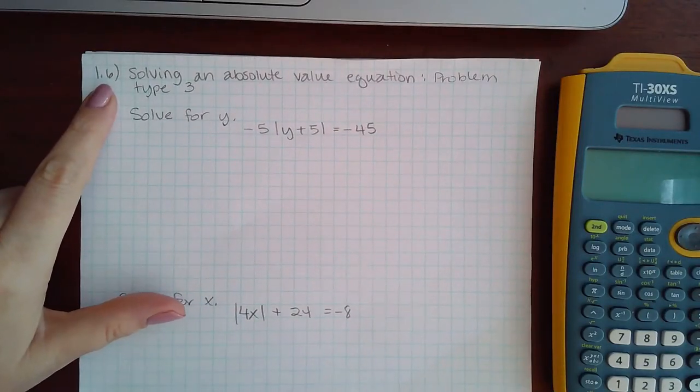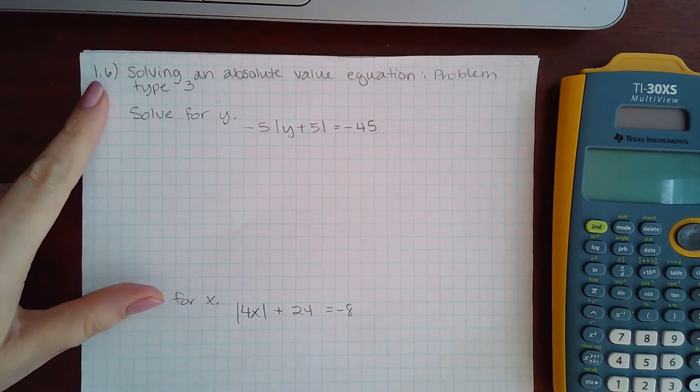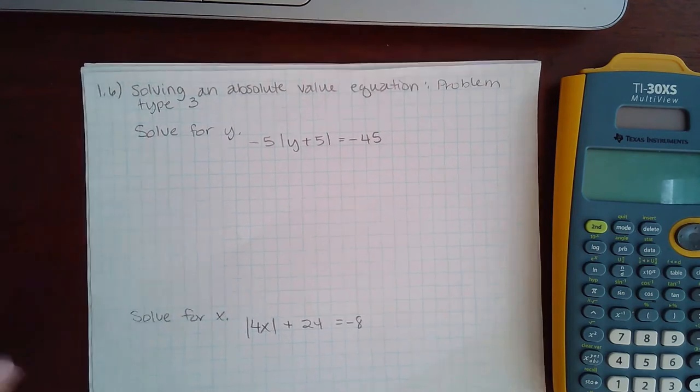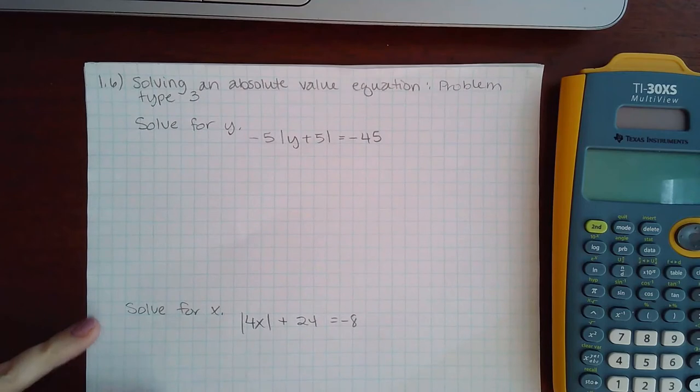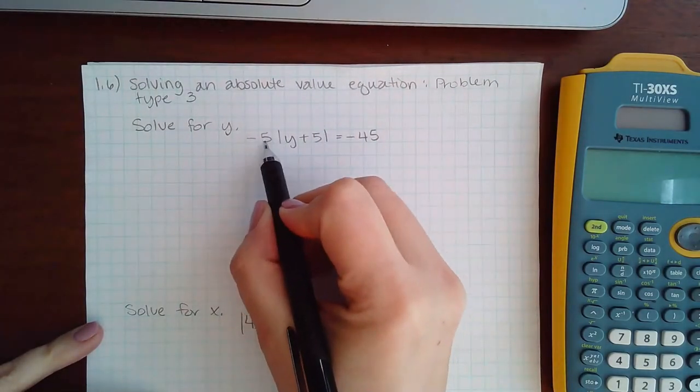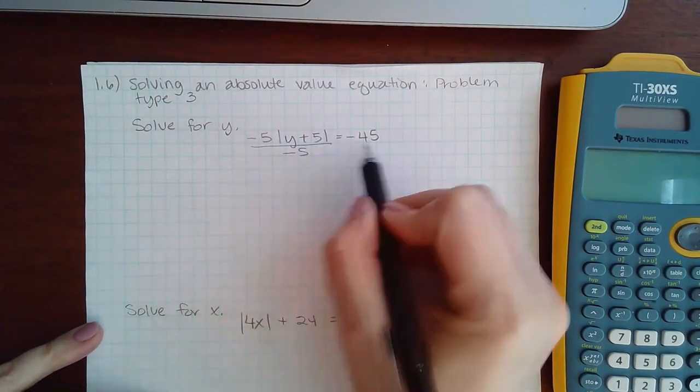This is 1.6, solving an absolute value equation, problem type 3. We need to isolate those absolute value bars. Since it's multiplied by negative 5, I'm going to divide by negative 5.